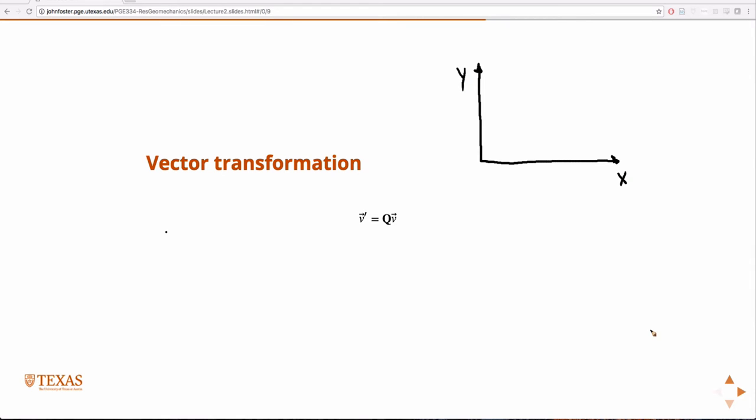let's say I rotate that coordinate system through an angle. So I'm going to rotate the coordinate system so that I have this new coordinate system we'll call x prime, y prime, and the angle through which we did the rotation we'll call theta.